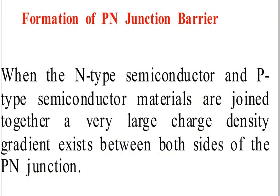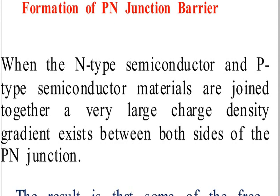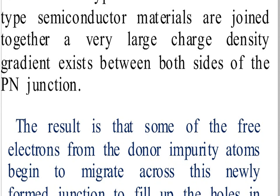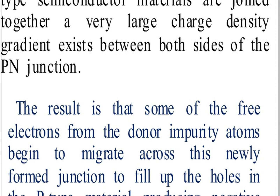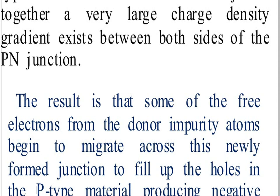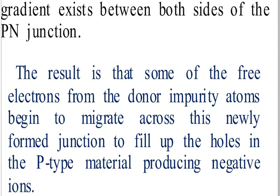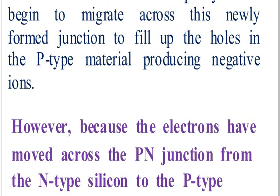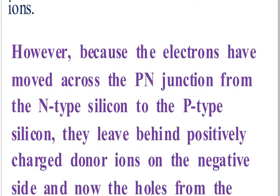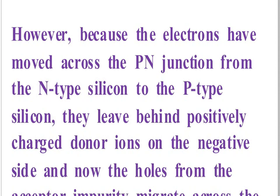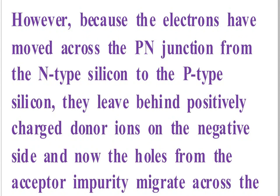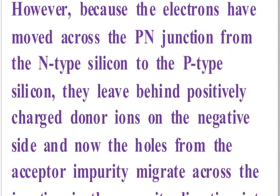Formation of the P-N junction barrier: When the N-type semiconductor and P-type semiconductor material are joined together, a very large charge density gradient exists between both sides of the P-N junction. As a result, some of the free electrons from the donor impurity atoms begin to migrate across the newly formed junction to fill up the holes in the P-type material, leaving behind positively charged donor ions on the N side.